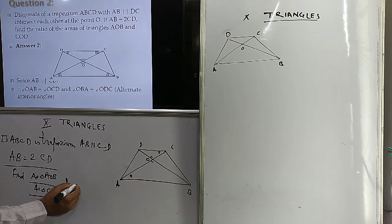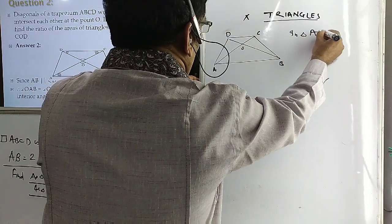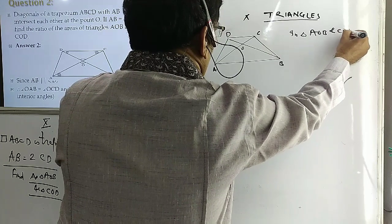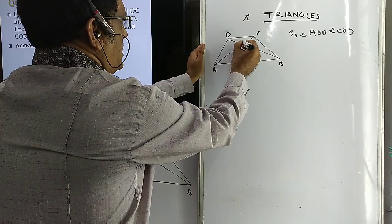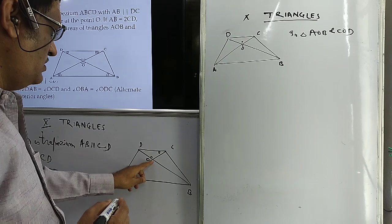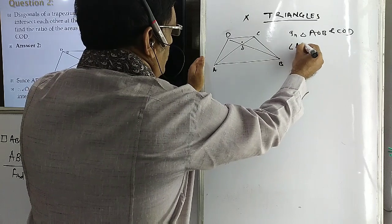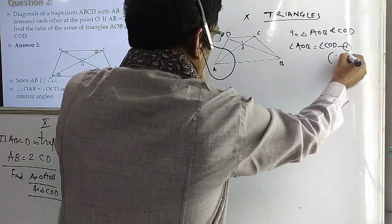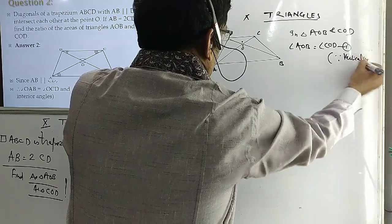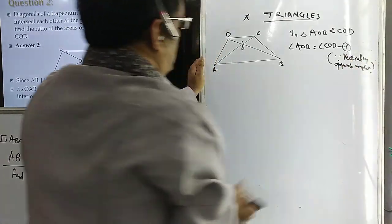In triangle AOB and triangle COD, first of all, angle AOB and angle COD are vertically opposite angles. So angle AOB equals angle COD. That is condition one — vertically opposite angles.